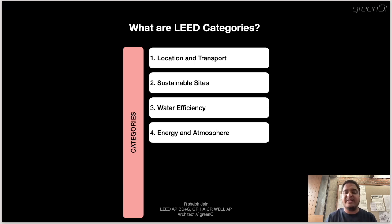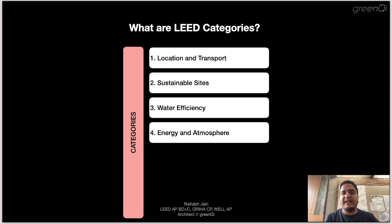Fourth is Energy and Atmosphere — one of my favorites as an architect. This category looks at reducing energy demands, increasing energy efficiency, replacing fossil fuels with renewable energy and carbon offsets, eliminating harmful refrigerants, and monitoring ongoing performance. This is the category where Apple Park scored a perfect 35 out of 35 points.